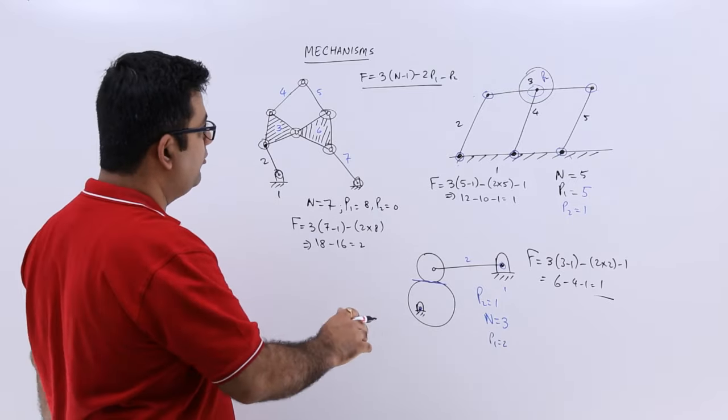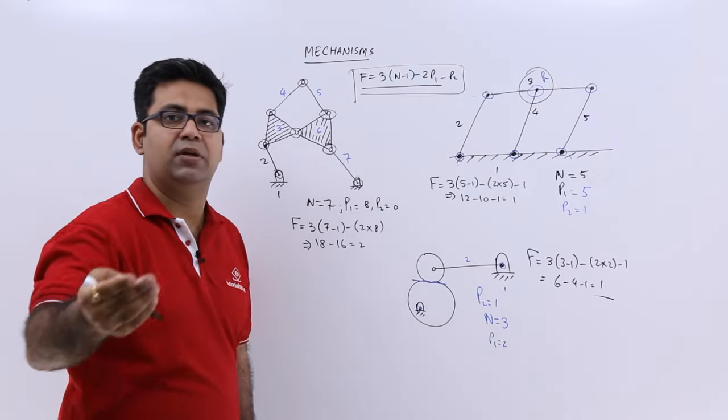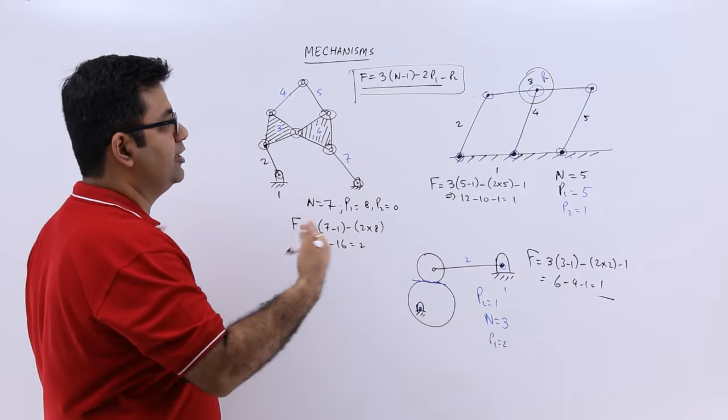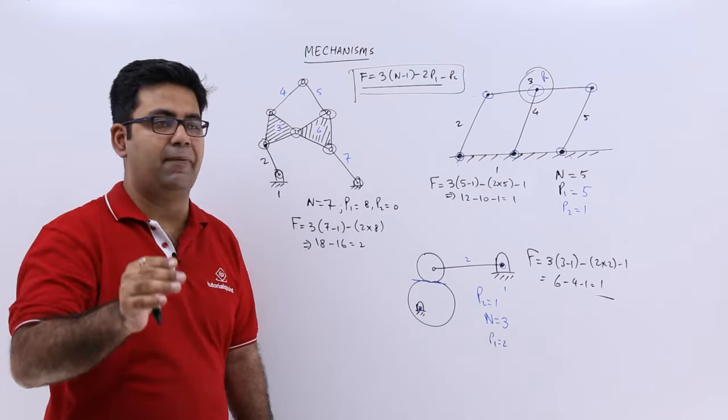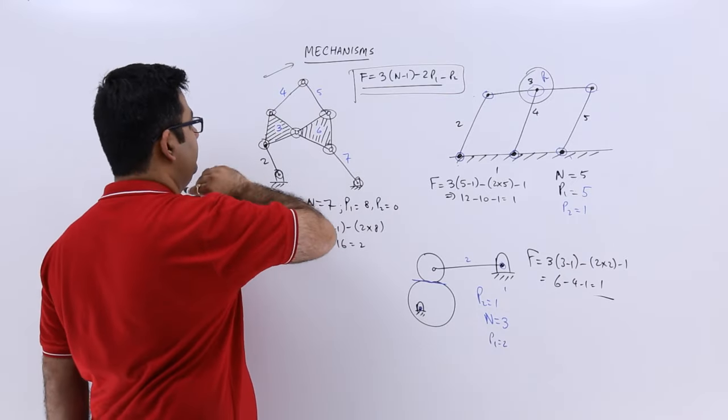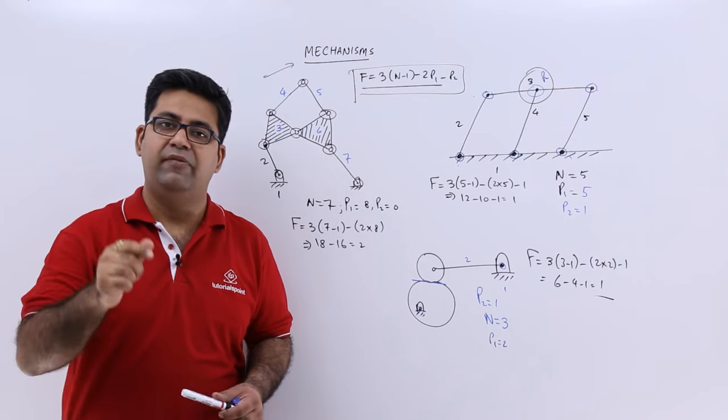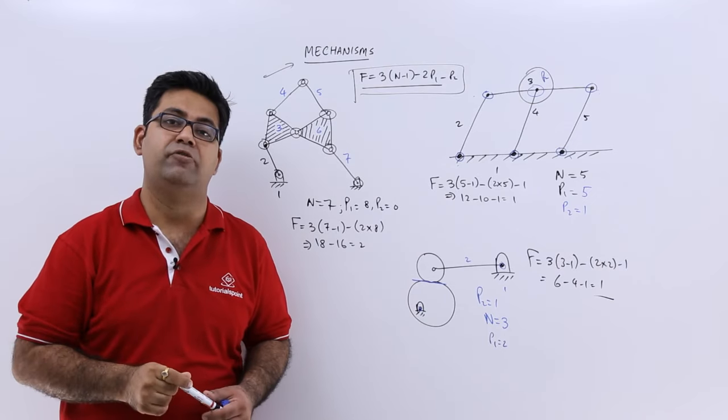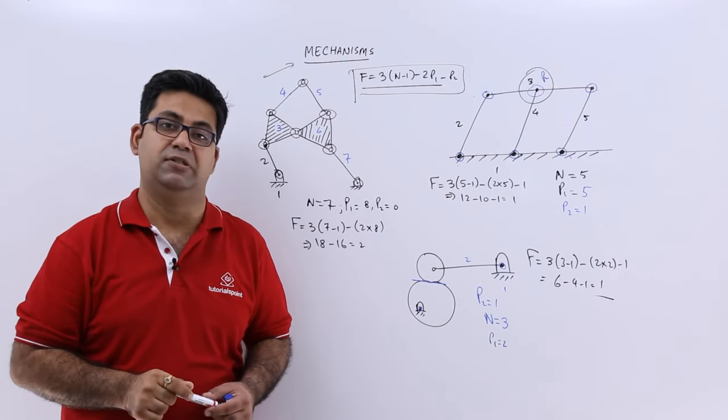So this is how you have to go on practicing finding out the degrees of freedom for various mechanisms. So I hope you got this. Now this ends the chapter on the introduction to mechanisms. Now in the next chapter onwards we will start with the kinematic analysis of mechanisms, and we will start with the velocity analysis of mechanisms.